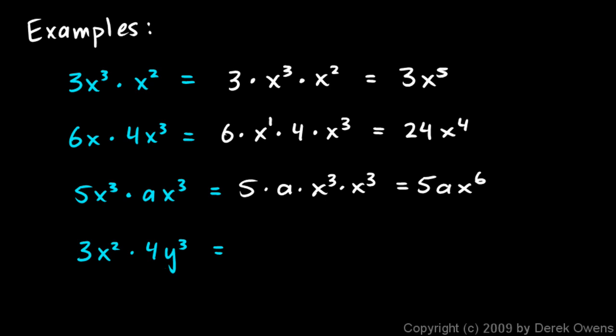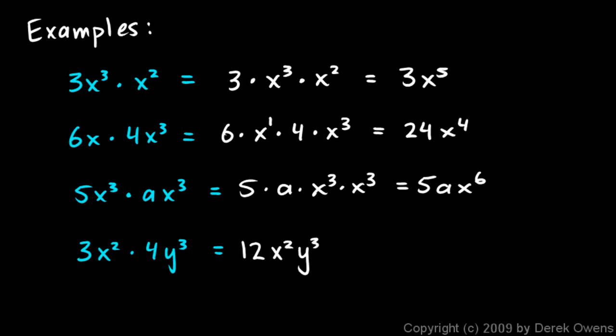For 3x squared times 4y cubed, multiply the 3 and 4 to get 12. But x squared and y cubed have different bases — one is x and one is y — so we cannot add the 2 and the 3. The rule only applies when bases are the same. So x squared and y cubed each stay as they are, and the final answer is 12x squared y cubed, which cannot be simplified further.